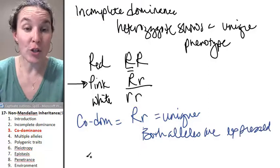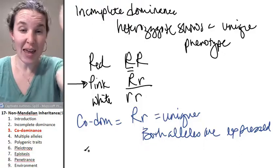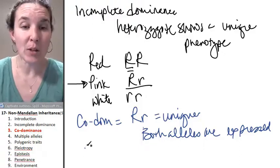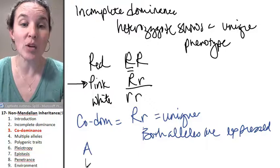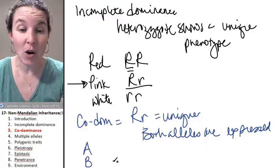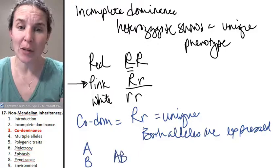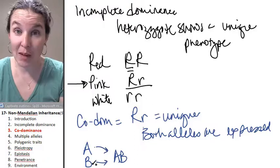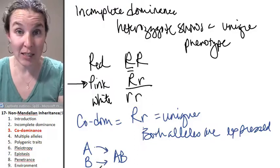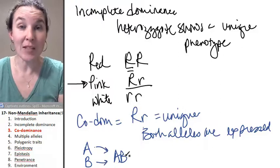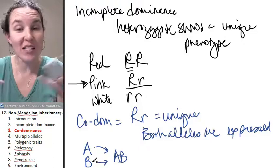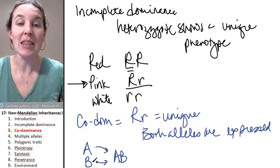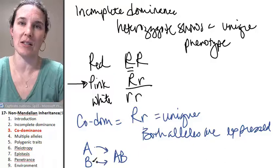Here are two examples of this. First of all, you have like blood type. You can have type A blood, you can have type B blood, or you can have type AB blood. This is an example of codominance because both A and B are dominant alleles. And if you have type AB blood, you've got both of those alleles present. You have a different phenotype that is the full expression of both of those alleles.